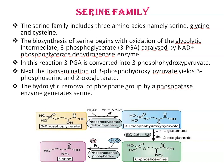The serine family includes three amino acids: serine, glycine, and cysteine. The biosynthesis of serine begins with the oxidation of the glycolytic intermediate. Here, 3-phosphoglycerate (3-PGA) is catalyzed by NADH and an enzyme, phosphoglycerate dehydrogenase. In this reaction, 3-PGA is converted into 3-phosphohydroxypyruvate.